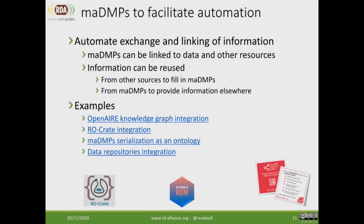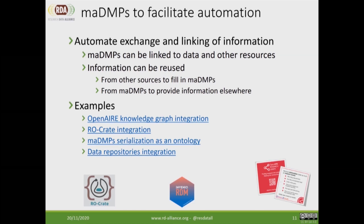Another way to continue work with MA-DMPs is to automate linking and exchange of information. We would like other objects — for example, research data packaging concepts or knowledge graphs — to refer to MA-DMPs, either by pointing to a DMP, reusing information from it, or providing information back to it. There are examples including integration with the Open Knowledge Graph, integration with Research Object Crates for data packaging, an ontology serialization to address semantic web and linked open data needs, and integration with data repositories such as InvenIO and Dataverse.